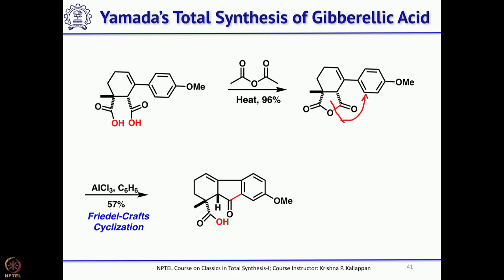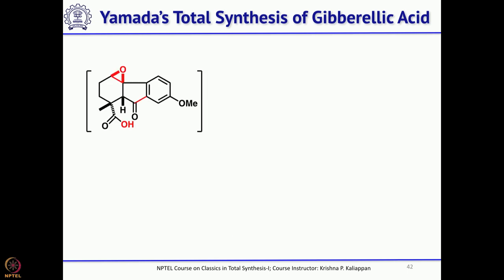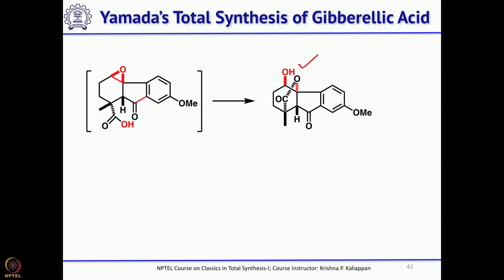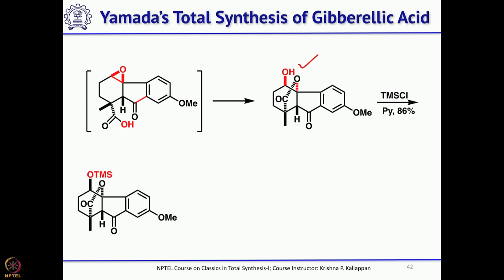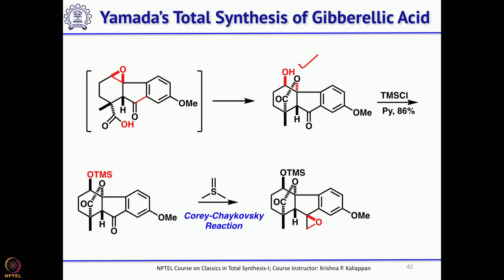He obtained the 5-membered ring and carboxylic acid. Then, treating with para-nitro perbenzoic acid — since there is a double bond, it will be epoxidized. You get the epoxide, and since there is a carboxylic acid, it will open the epoxide to give a hydroxylactone. Then protect the hydroxyl as a TMS ether — TMS is a very labile protecting group and is transient — then carry out the Corey-Chaykovsky reaction, converting the CH2 into an epoxide with one extra carbon.